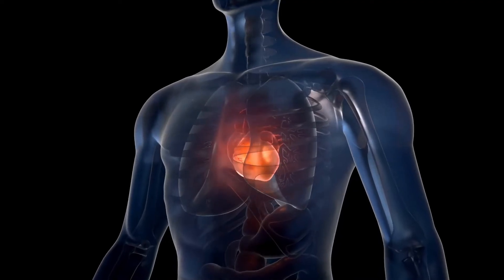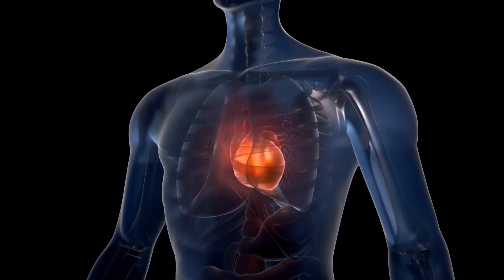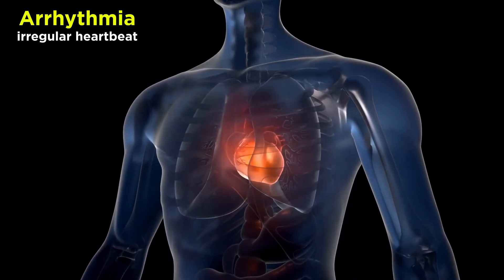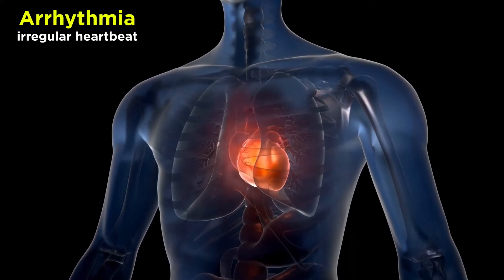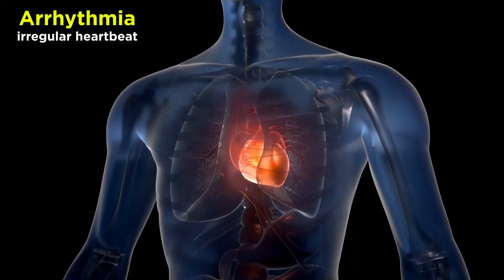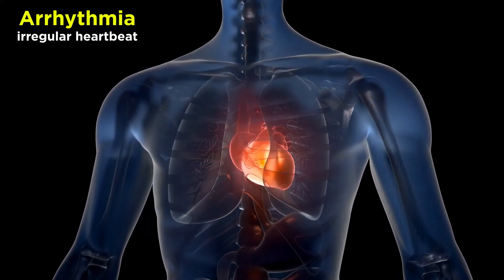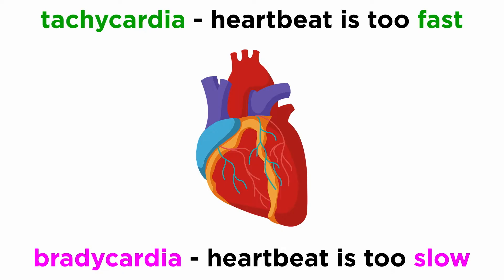Now that we understand how the heart rhythm is established, we can consider how arrhythmias in this system can occur, and how pharmacology can treat them. Arrhythmias can be thought of as a binary, either being too fast, known as tachycardia, or too slow, known as bradycardia.